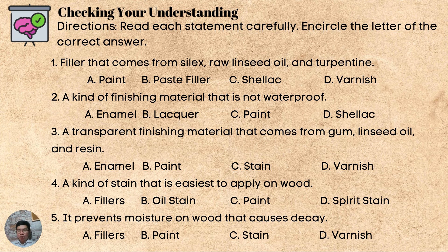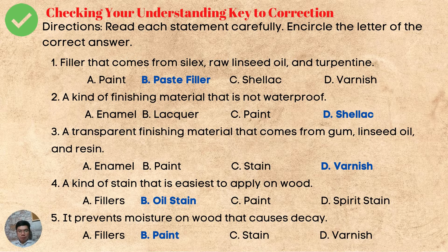Are you done? It's now time to check your work. Here is the key to correction. Number 1: Filler that comes from Celex, raw linseed oil, and turpentine — the answer is letter B, Paste Filler. 2. A kind of finishing material that is not waterproof — the answer is letter D, Shellac. 3. A transparent finishing material that comes from gum, linseed oil, and resin — the answer is D, Varnish. 4. A kind of stain that is easiest to apply on wood — the answer is letter B, Oil Stain. And number 5: It prevents moisture on wood that causes decay — the answer is Paint. What's your score? Comment down below.